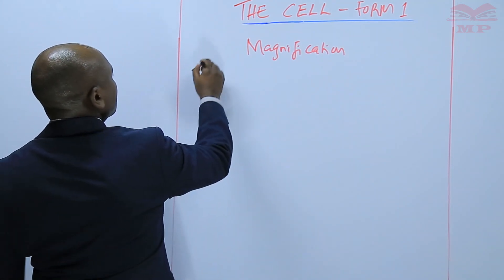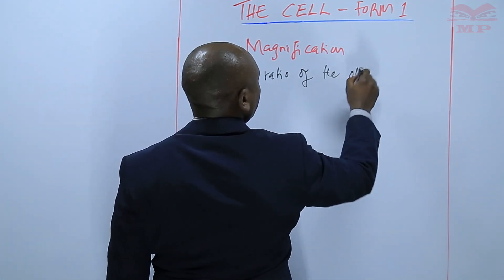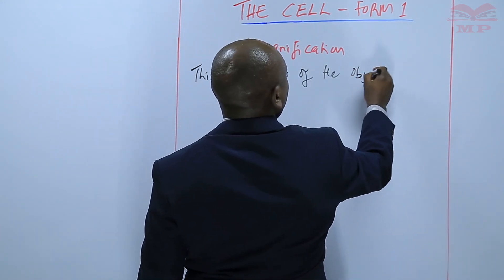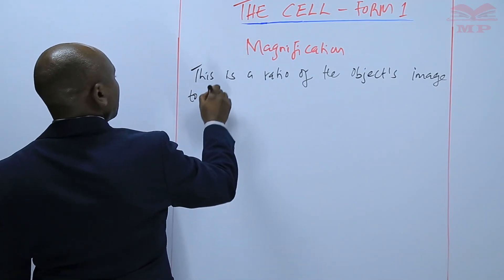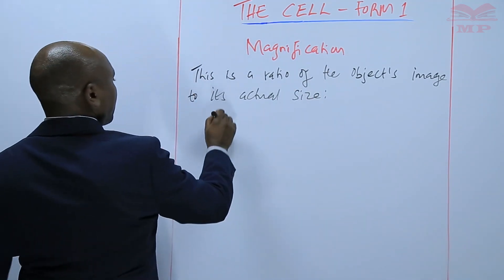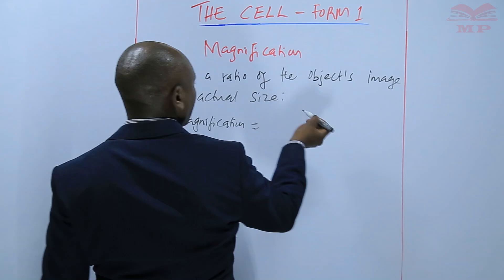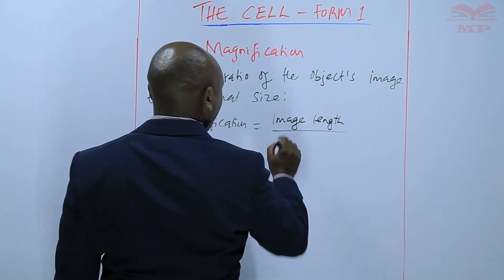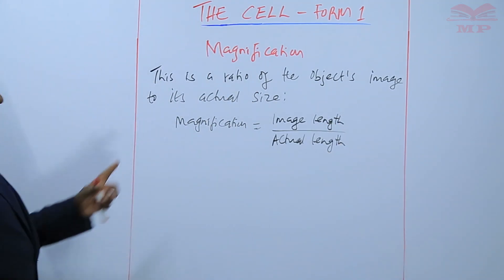So we can say that magnification is a ratio of the object's image to its actual size. That is why we calculate magnification as: magnification equals image length over the actual length of the object. So that is the general magnification.